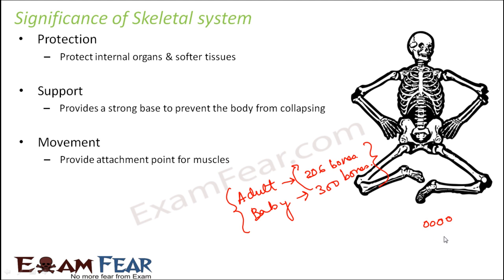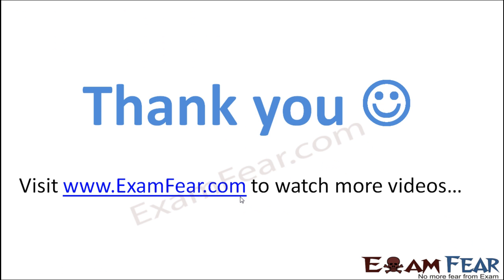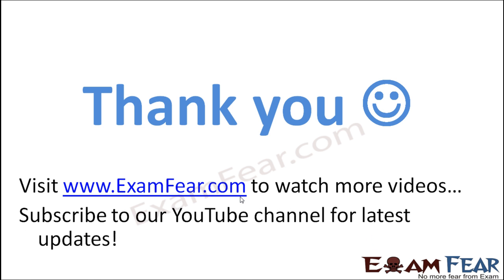Let's say there were four small bones. With growth, all these four small bones joined together to form one larger bone. So earlier the number of bones were four, and now the number of bones is one. In this way, as a person grows, small bones join together to form a bigger bone. Thank you. Please visit www.examfear.com to watch more educational videos. Please do not forget to like and subscribe to our YouTube channel for latest updates. Thank you once again.